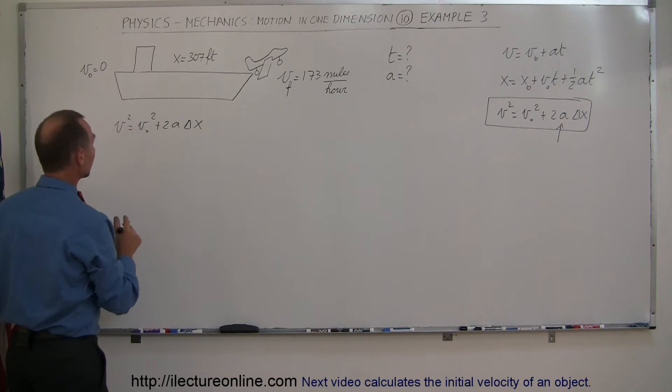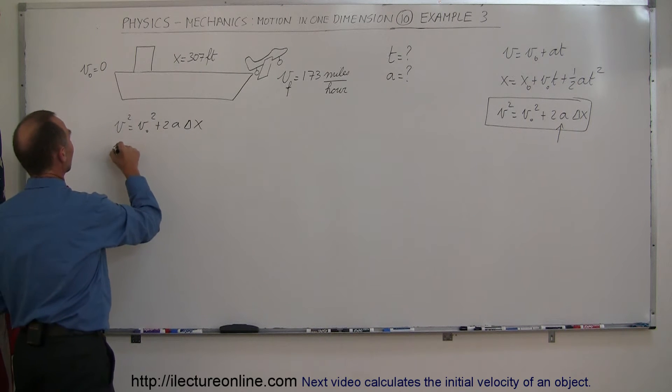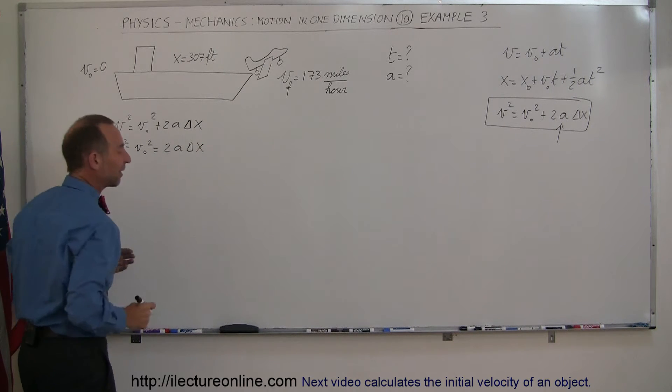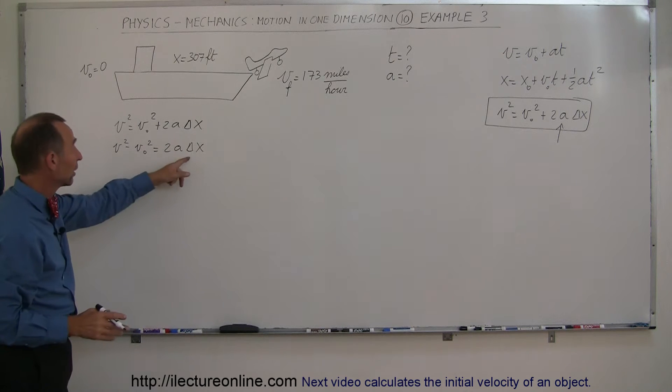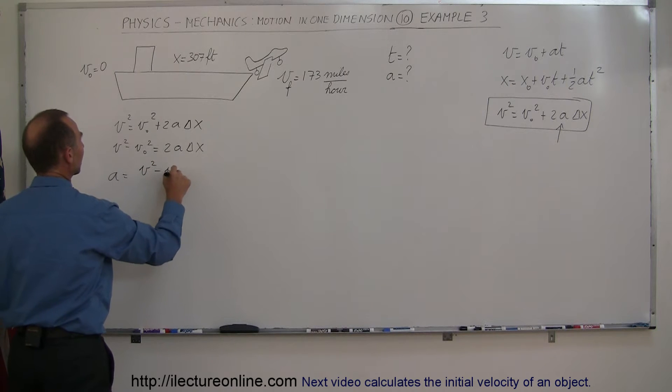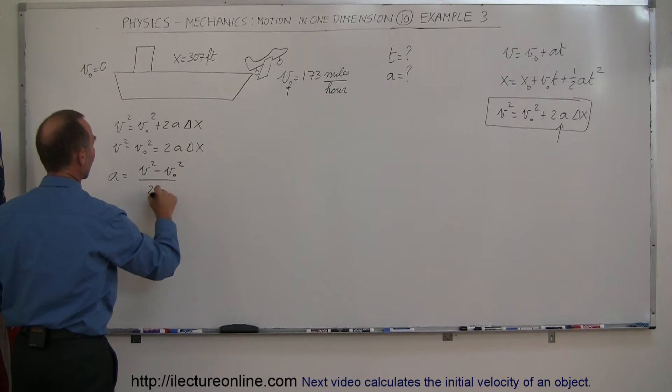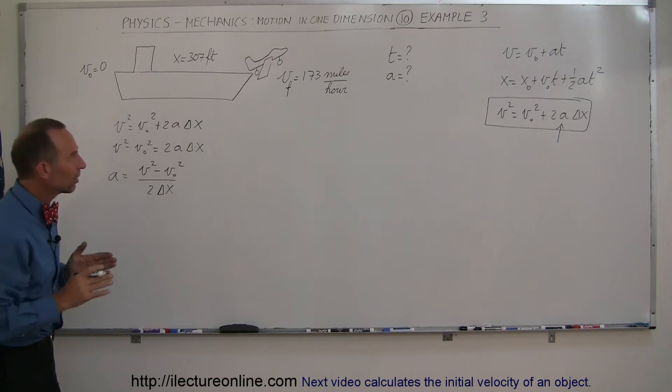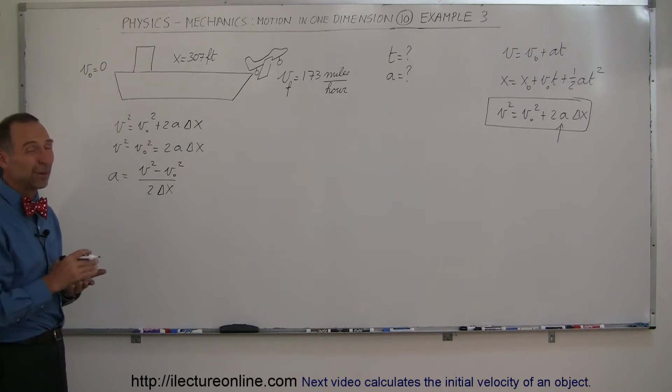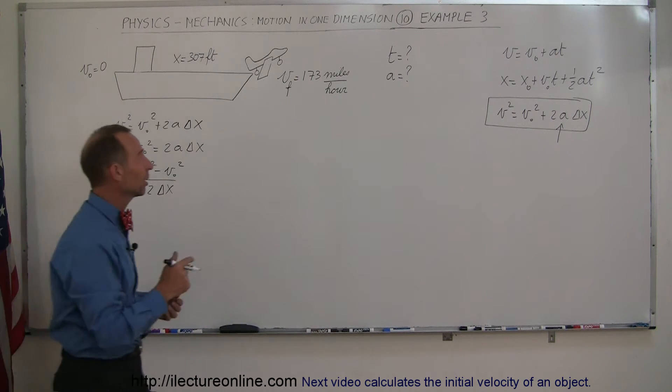So rearranging the equation a little bit, I can say that V squared minus V initial squared is equal to 2A delta X. And so if I now divide both sides of the equation by 2 delta X and turn it around, I can then say that acceleration is equal to V squared minus V initial squared divided by 2 times the distance traveled. Now, notice that the distance is in terms of feet, and the velocity is in terms of miles per hour. So we have to convert that from miles per hour to feet per second. So how do we do that?